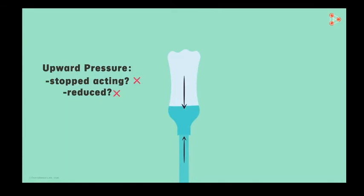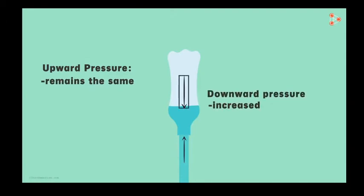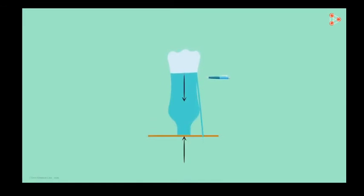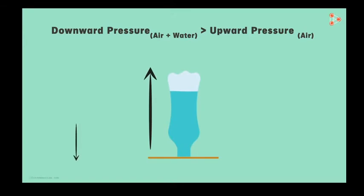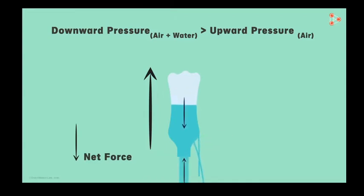The upward pressure on the paper didn't stop or reduce. But the downward pressure increased. When we made holes in the bottle, we allowed air to flow inside from the top. The air from the top started exerting pressure on the water. The combined pressure of water and air from the top could easily overcome the pressure from the bottom, resulting in a net downward force on the paper — that is why the paper detaches.